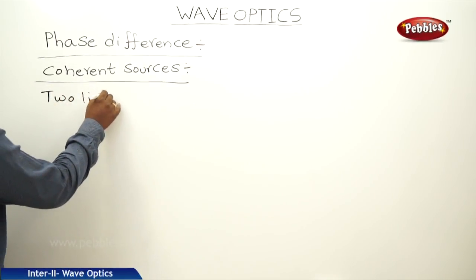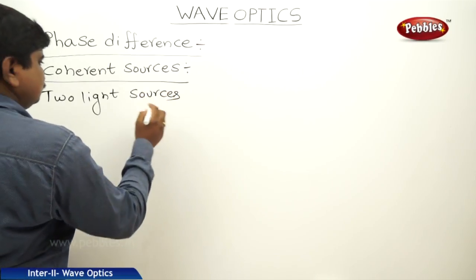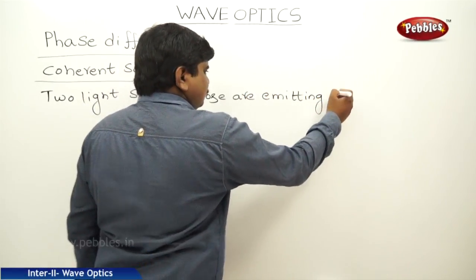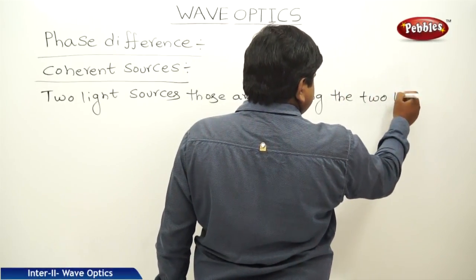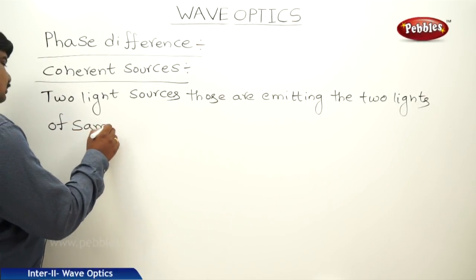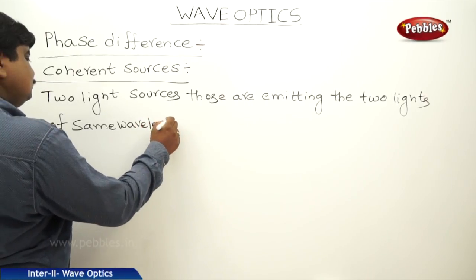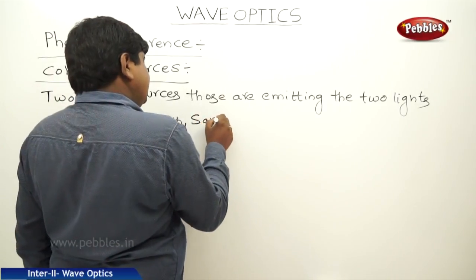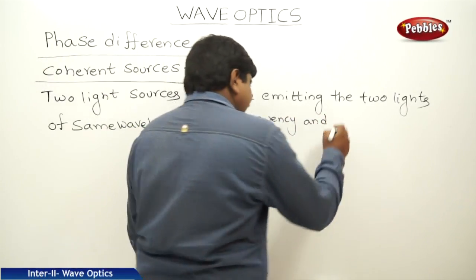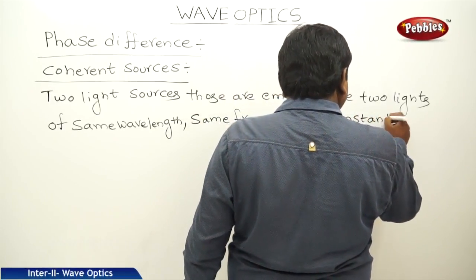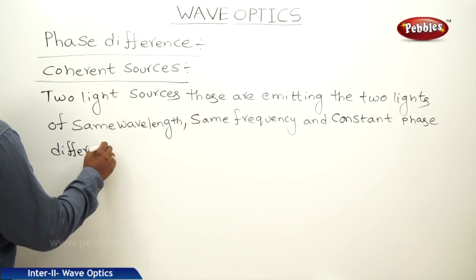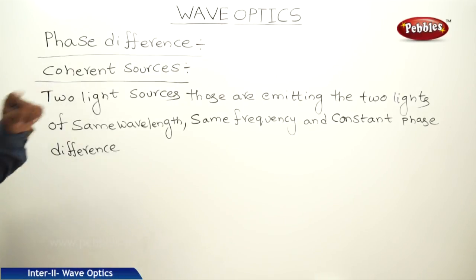Two light sources emitting two lights of the same wavelength, same frequency, and constant phase difference are called coherent sources.